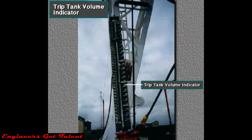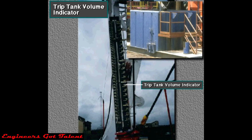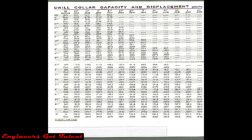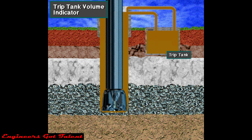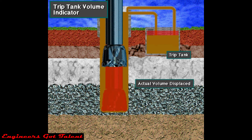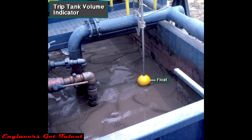A trip tank volume indicator helps the driller monitor the amount of mud being displaced by the tubulars or wire rope being run in and pulled out of the hole. Crew members calculate tubular displacement before each trip using tables from a handbook. Then, during a trip, they compare the calculated volumes to the actual displacement. Close monitoring of the trip tank during trips is crucial to proper well control.